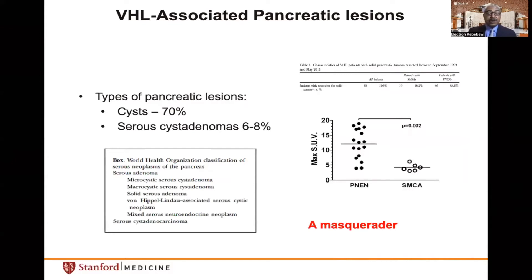Serous cyst adenomas also have no malignant potential; however, they can masquerade as solid pancreatic lesions concerning for a neuroendocrine tumor. We found that FDG PET scan can help distinguish between pancreatic neuroendocrine tumors, which typically have a high SUV, and serous microcystic adenomas, which do not. This is an important reason for performing functional imaging studies, especially if surgical intervention is being entertained, as in one case resecting a solid lesion revealed it was a serous cyst adenoma.